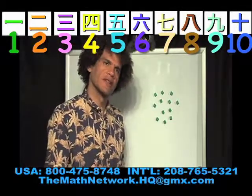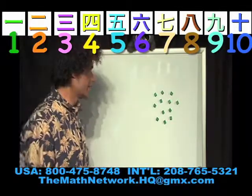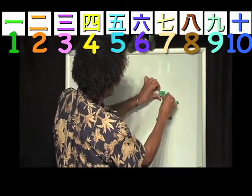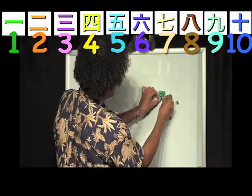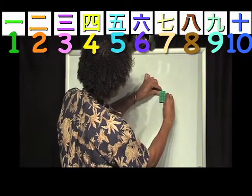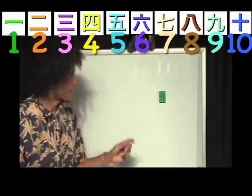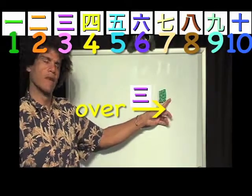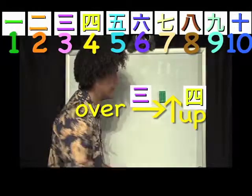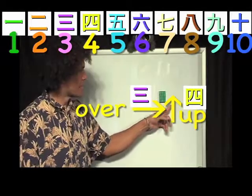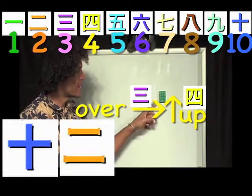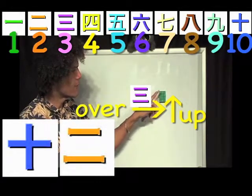But if we form them into a rectangle, they become very easy to count. Now I can see that if I have a rectangle that's simply three over and four up, three times four is twelve. The rectangle makes it very easy to count so that I don't have to count every single block in there.